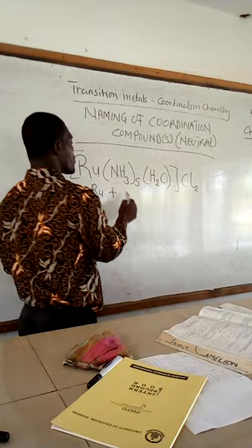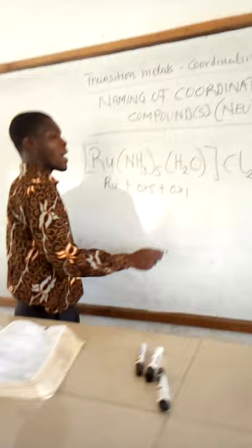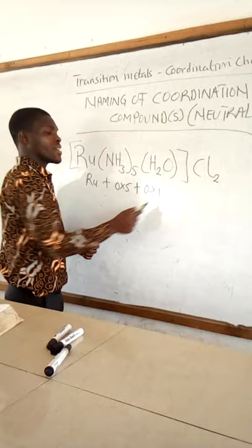Ruthenium plus—you know that the oxidation state of a neutral ligand is 0. So 0 times 5 plus 0 times 1. And you know the oxidation state of chlorine to be minus 1. So plus minus 1 times 2 equals 0.